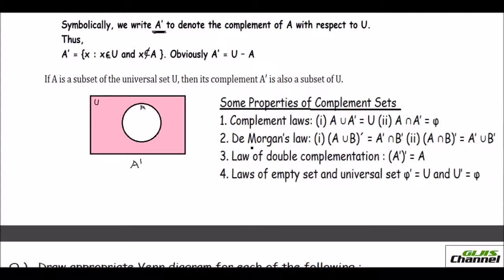The second property is De Morgan's law, in which the complement is distributed over union and intersection. The first law: (A union B) complement equals A complement intersection B complement. Similarly, (A intersection B) complement equals A complement union B complement.